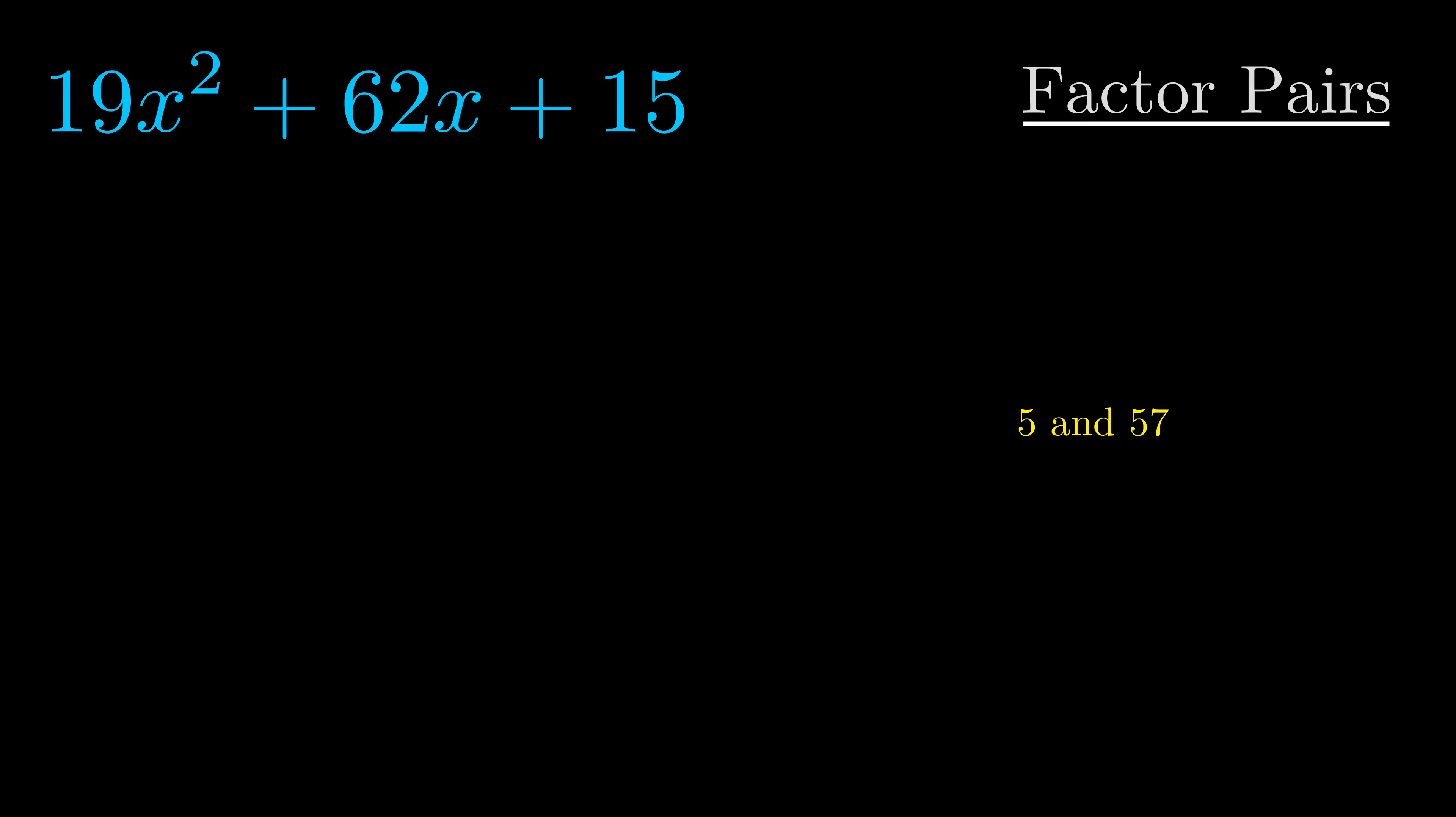Now once we have this factor pair, what we want to do is use it to split up the b value.